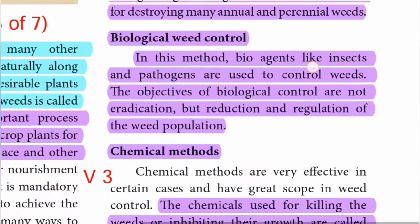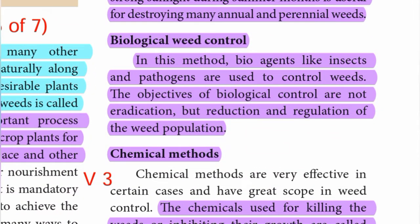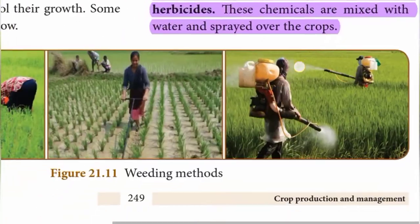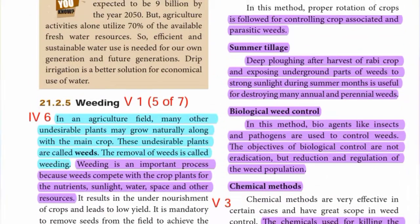Biological weed control: In this method, bio-agents like insects and pathogens are used to control weeds. The objective of biological control is not eradication but reduction and regulation of the weed population. Chemical methods: The chemicals used for killing weeds or inhibiting their growth are called herbicides. These chemicals are mixed with water and sprayed over the crops.